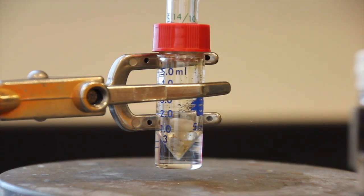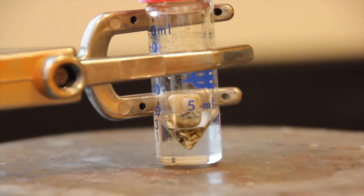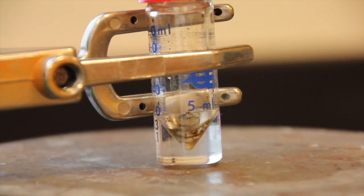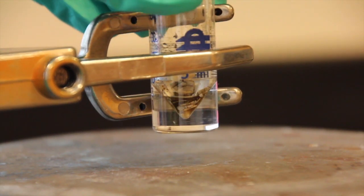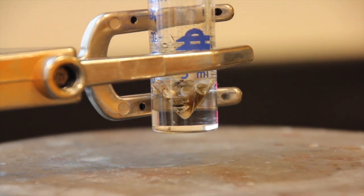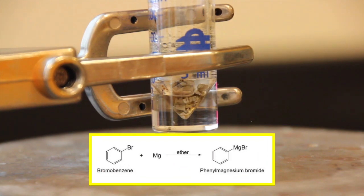Begin stirring your magnesium while you deliver the 0.2 milliliters of bromobenzene solution from the syringe to the magnesium in the vial. Stir the mixture gently, trying to avoid throwing the magnesium onto the sides of the vial. The evolution of bubbles from the surface of the magnesium serves as an indication that the reaction is starting.